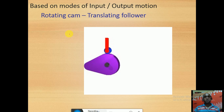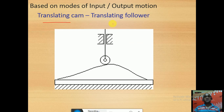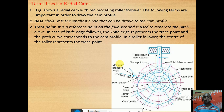Based on the modes of input and output motions, it may be a rotating cam with translating follower, a rotating cam with oscillating follower (where the follower is pivoted and oscillates), or a translating cam with translating follower — where the cam translates continuously and because of that the follower also translates, but the translation of the cam and follower are perpendicular to each other.